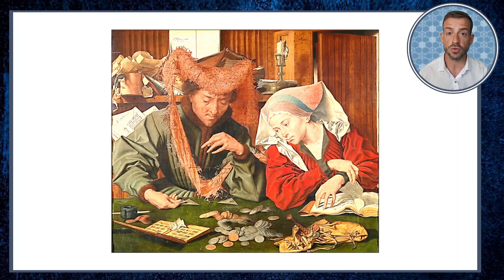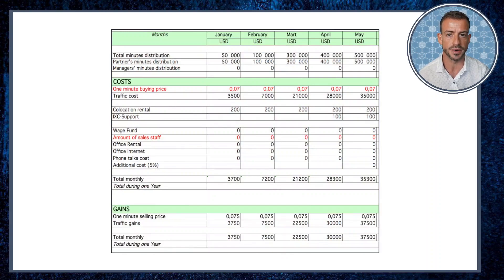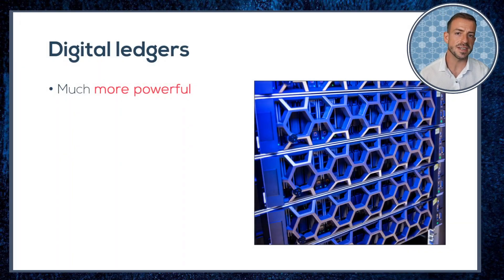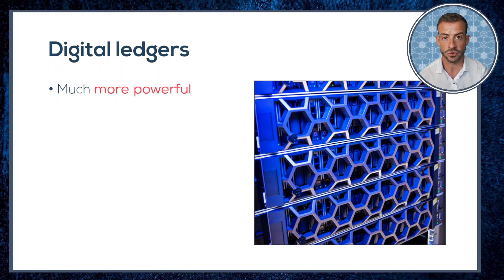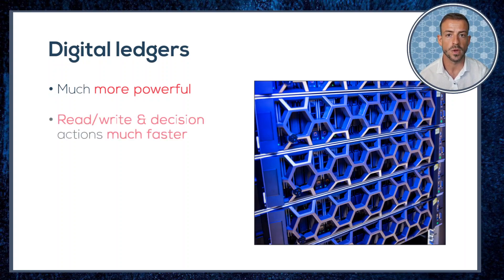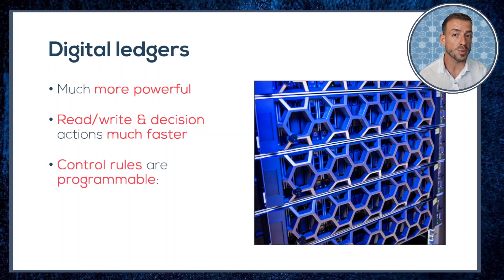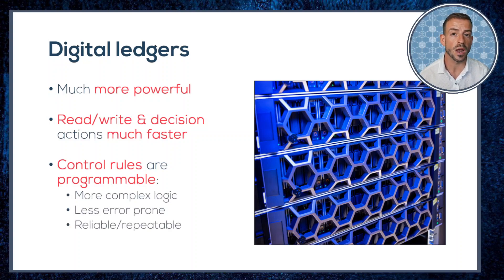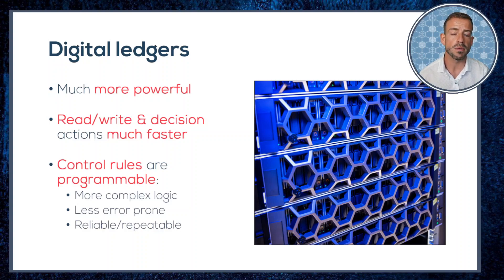So if ledgers can be used as control devices that long ago, what significance does a digital ledger have over a traditional one? The important detail is not that the ledger is electronic or digital, but that these properties make the tracking and control capabilities of a digital ledger much more powerful. Read, write, and decision actions can all take place much faster. Control rules are programmable — that means we can implement more complex logic, it's less error prone, and it's reliable and repeatable. These apply to both record keeping and control uses of our ledgers, but the programmability of control probably has the furthest reaching implications, as we'll see in the case of blockchain.